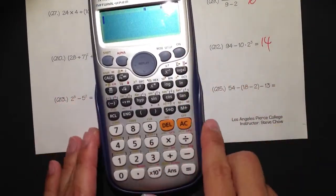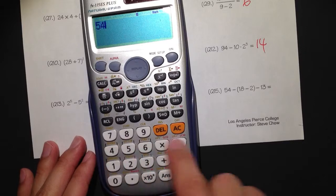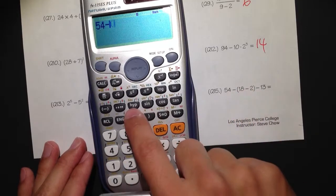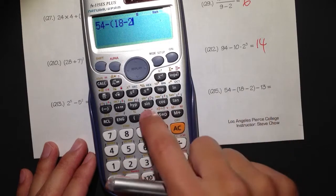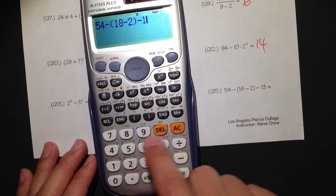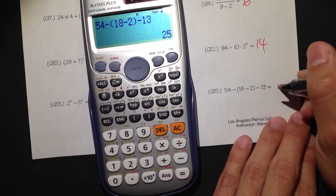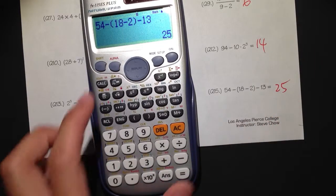Number 15. Let's go through this quickly. 54 minus parentheses 18 minus 2 parentheses minus 13. Just like that. Nice and easy. And we get 25.